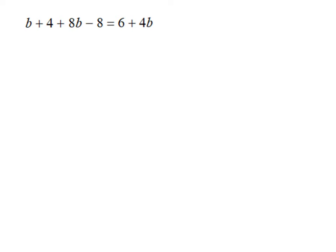The first thing we need to do is simplify both sides of the equation. On the left side, b and 8b are like terms, and 4 and negative 8 are like terms. Combining b plus 8b gives 9b, and 4 minus 8 gives minus 4. On the right side, 6 and 4b are already simplified, so it stays as 6 plus 4b.